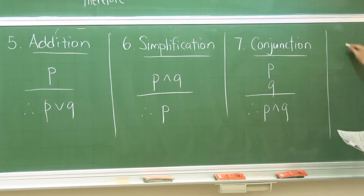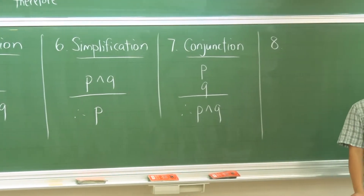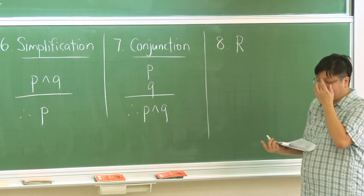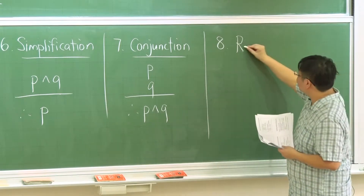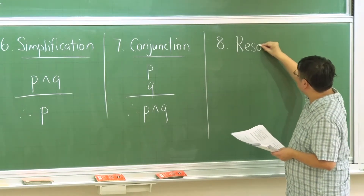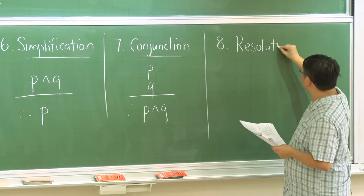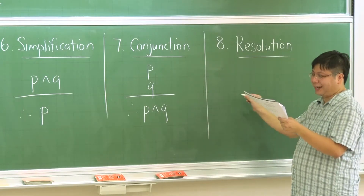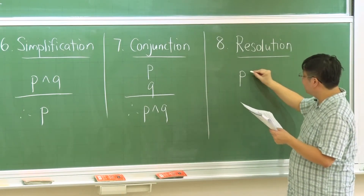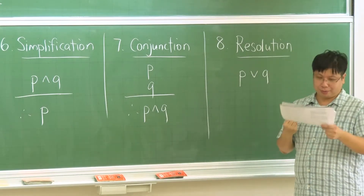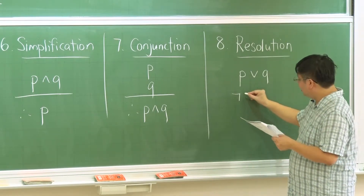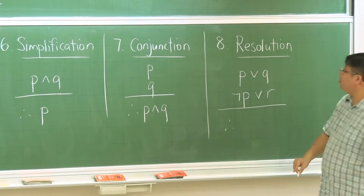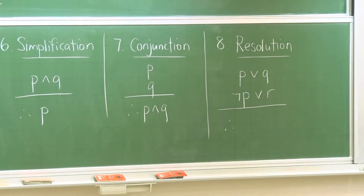The next rule is resolution. It's not that natural but is used a lot in rule-based artificial intelligence research. Suppose I know that P or Q is true, and also that not P or R is true. Can we conclude something non-trivial from these two premises?